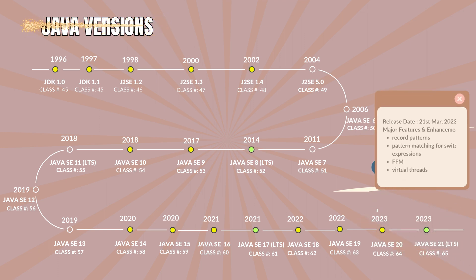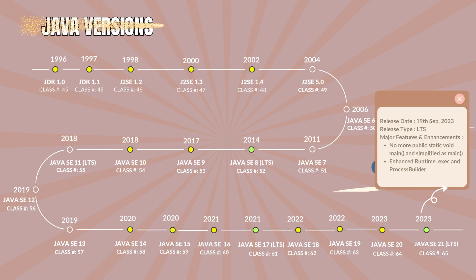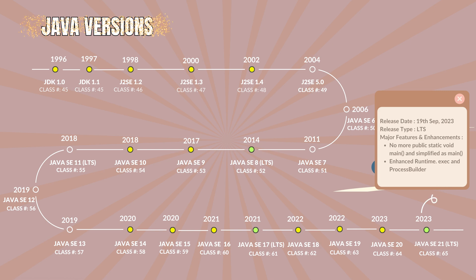Java 20.0 with the class file version 64. It was released on 21st March 2023. The major features and enhancements are no more public static void main — simplified as main — and enhanced runtime exec and process builder.